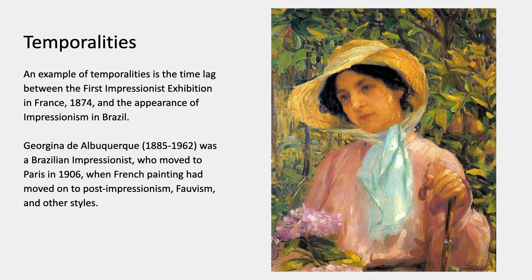Here's an example of a time lag of that sort. The first Impressionist exhibition in France was 1874, but Impressionism first appeared in Brazil much later. This is a painting by Georgina de Albuquerque, who died in 1962 — a Brazilian Impressionist who moved to Paris in 1906. At that point, French painting had already moved on past post-Impressionism to Fauvism and other styles, but she wasn't educated in those more radical styles, and so she brought Impressionism back to Brazil much later than it had been practiced in Paris. That's typical of the 19th and early 20th century — it happened all around the world.